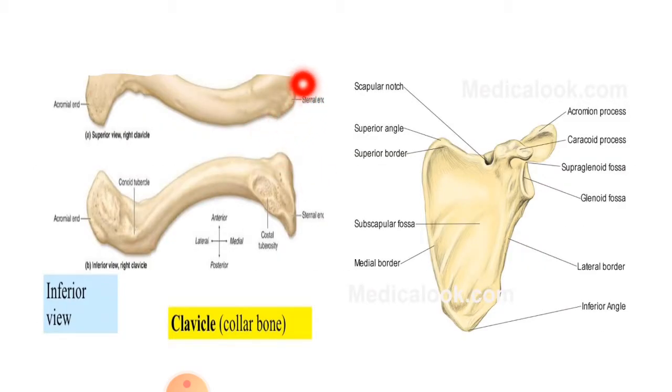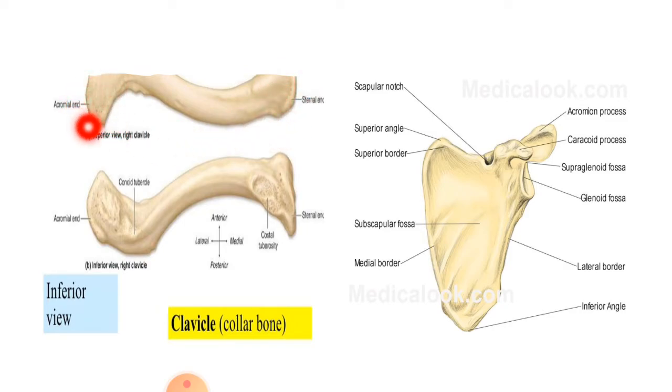The clavicle provides the only link between the upper limb and the axial skeleton. It has two joints: at the sternal end with the manubrium of the sternum, and at the acromial end with the acromion process of the scapula.